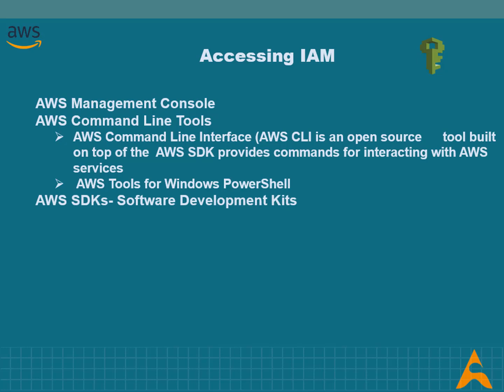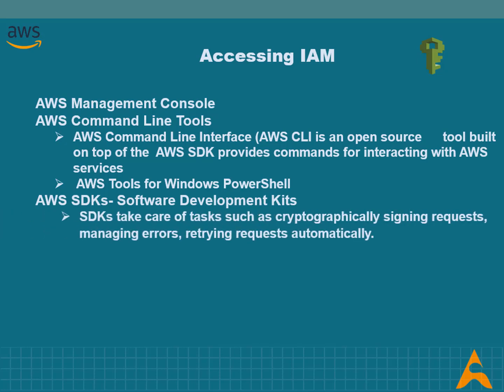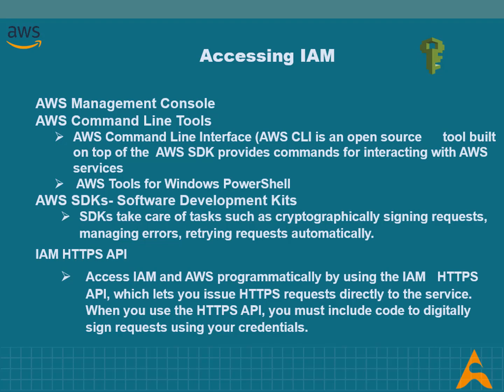AWS provides two sets of command line tools: the AWS Command Line Interface and the AWS Tools for Windows PowerShell. Since AWS provides software development kits consisting of libraries and sample code for various programming languages and platforms, the SDKs provide a convenient way to create programmatic access to IAM and AWS. The IAM HTTPS API also allows users to access IAM and AWS programmatically by issuing HTTPS requests directly to the service, where requests must be digitally signed using credentials.